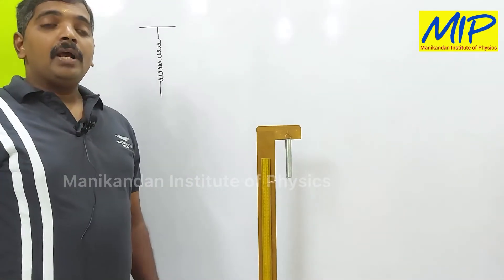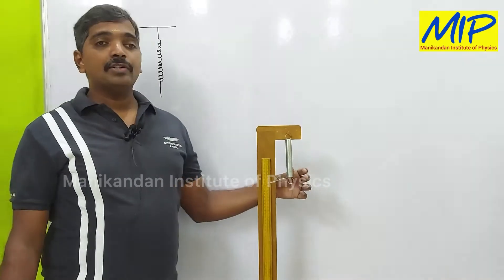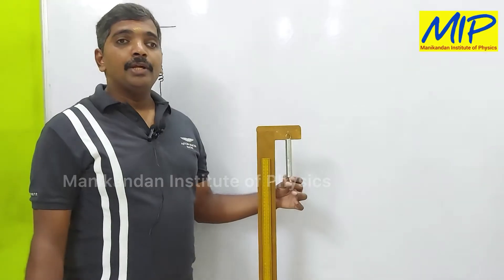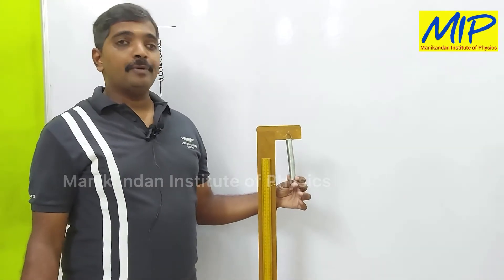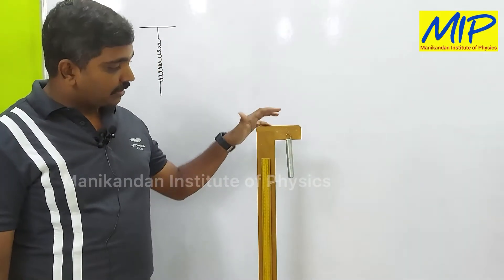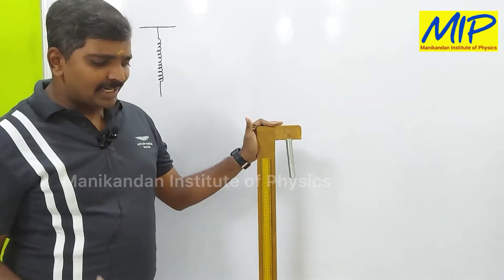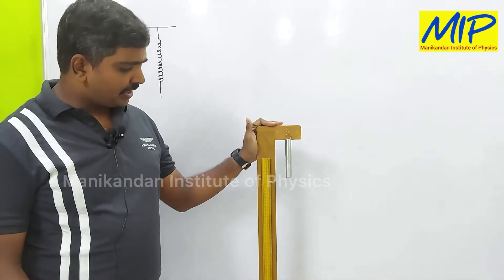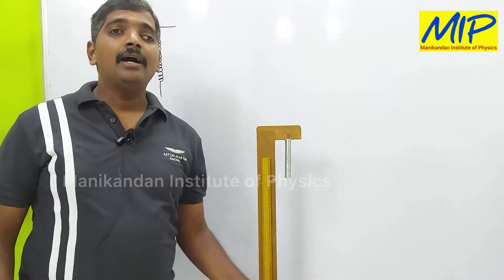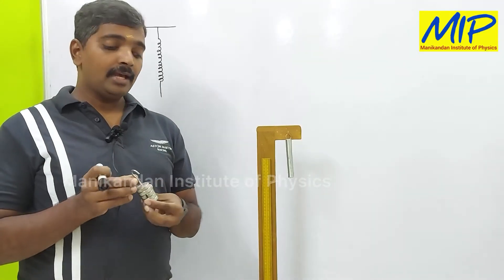Today I am going to explain how to determine the spring constant of a given helical spring. To determine the spring constant we need a spring, a rigid support, a scale, and weights with a hanger.